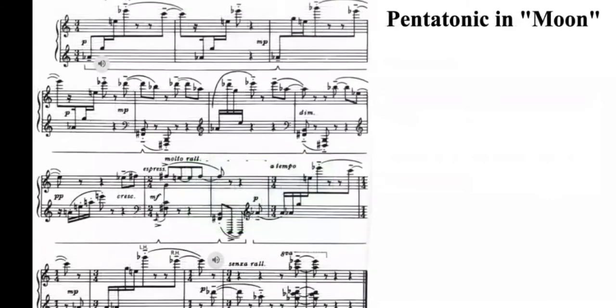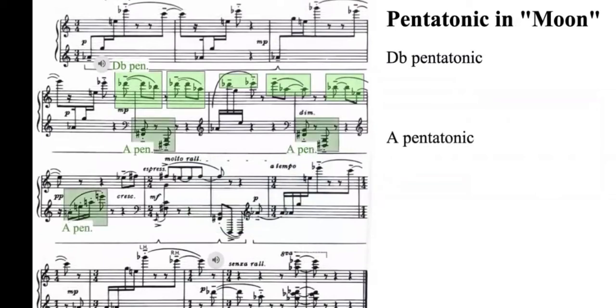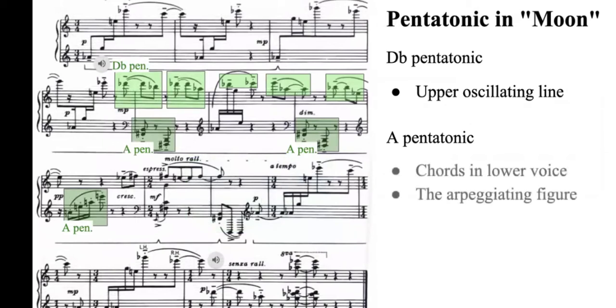In the movement Moon, pentatonic elements play a more important role. In bar 5, Db and A pentatonic scale pitches are presented. The Db pentatonic content is presented as an upper oscillating line, and the A pentatonic is packed as two consecutive chords in lower voice and the arpeggiated figure. The upper Db pentatonic pitches are even partially combined with 0145, which is highlighted in blue.